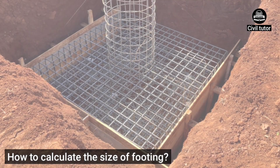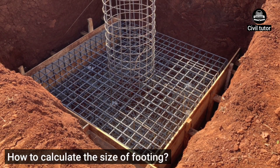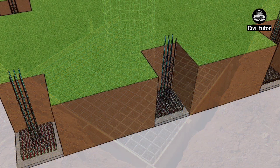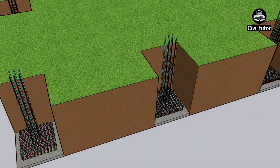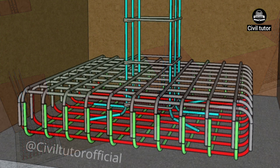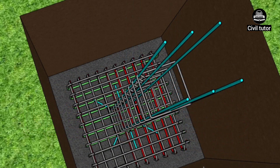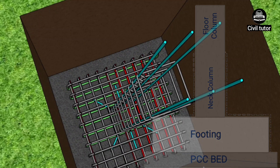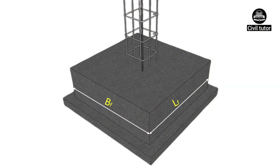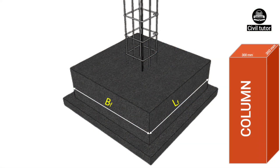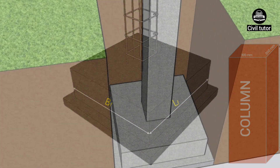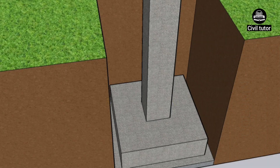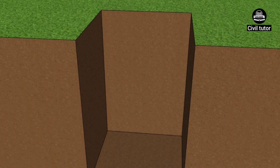Footings are the most important components of a structure. The main function of them is to transfer the loads of the structure to the underlying soil. Hence, it becomes very important to provide the proper size of footing to carry a given set of loads. The size of footing depends on the size of the column, the load it has to carry, and the soil bearing capacity.